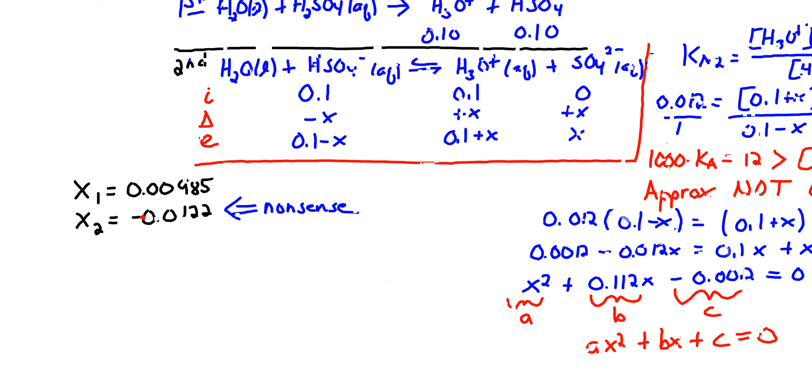We have a negative value here, which indicates that this reaction goes in the reverse direction, which it can't. We know it's going to go in the forward direction, so this root makes no sense.